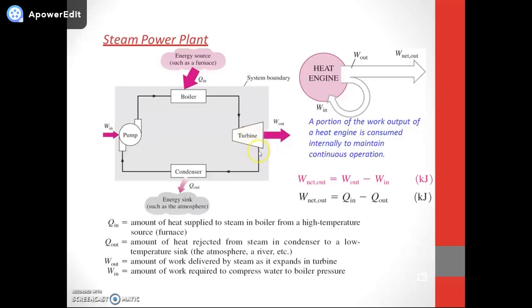After coming out from the boiler, it will produce steam. Steam goes into the turbine. After coming out from the turbine, it goes to the condenser, which will convert the steam into liquid.